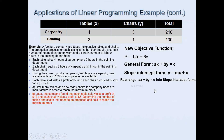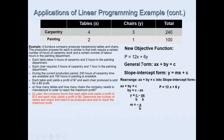To rearrange into slope-intercept form, move the ax term to the other side — change side, change sign — giving -ax, then divide both sides by b. This gives y = c/b − (a/b)x. The coefficient of x, which is −a/b, is the gradient. For our new objective function, a = 12 and b = 6, so the gradient is −12/6, which simplifies to −2. The gradient of this new objective function is always −2, regardless of the profit value.